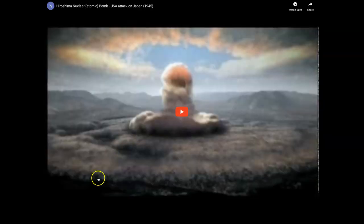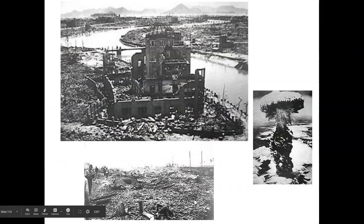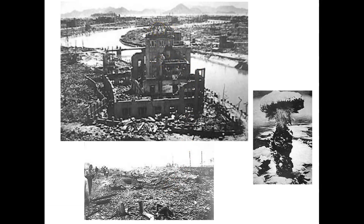Here is a photo taken from the Enola Gay of the explosion over Hiroshima, and here are some pictures at ground zero. This very famous dome building withstood the blast — Japan's proximity to the Ring of Fire means they build structures to withstand geological events. Although the dome lost its roof, it withstood both the blast and heat and still stands today as a museum. Some teachers from West Hampton Beach have been there and brought back these photos.